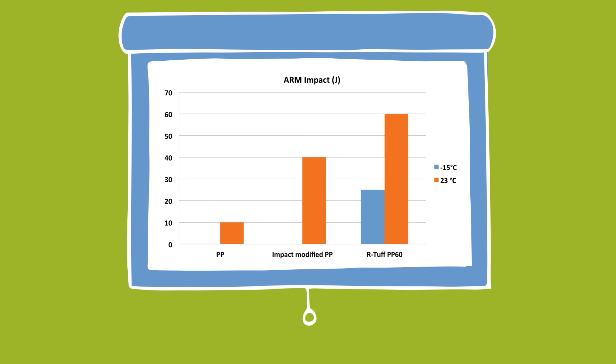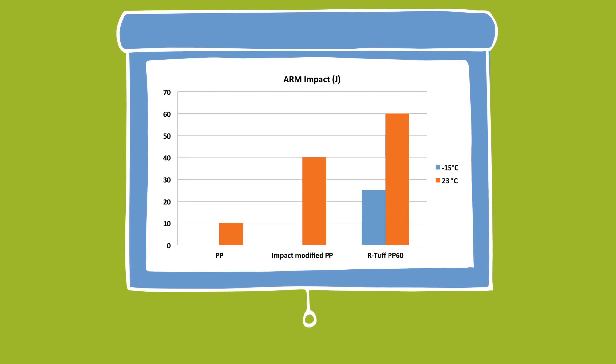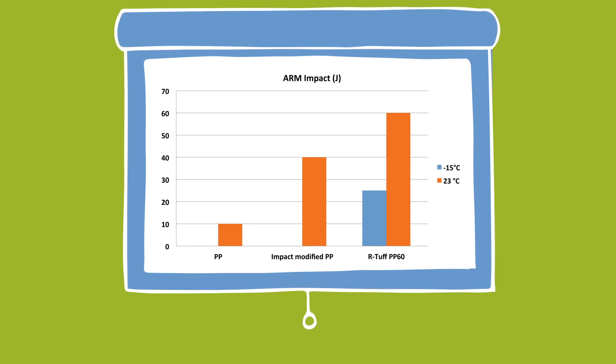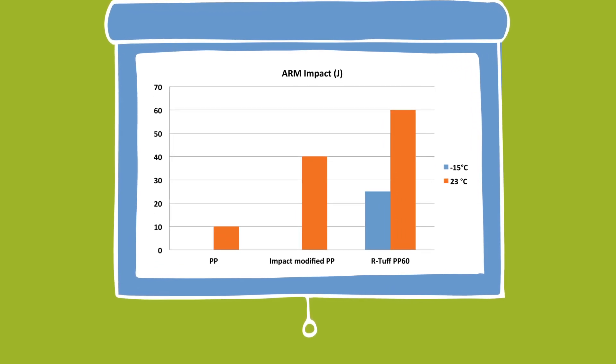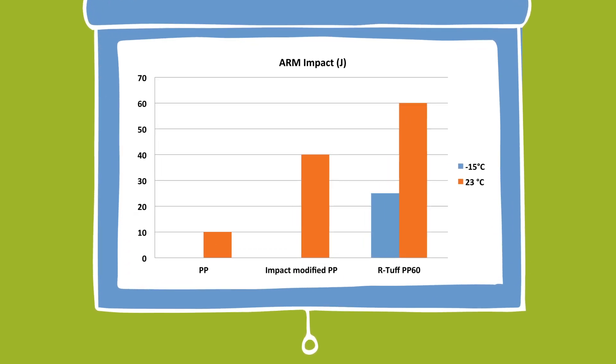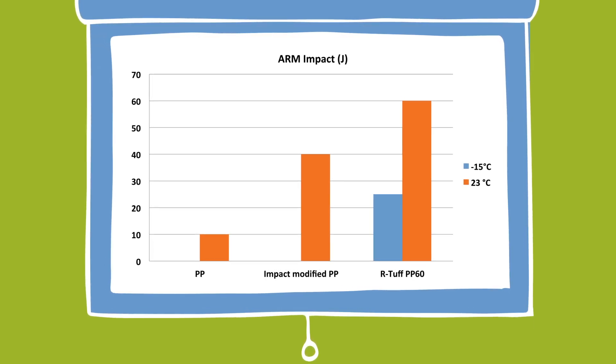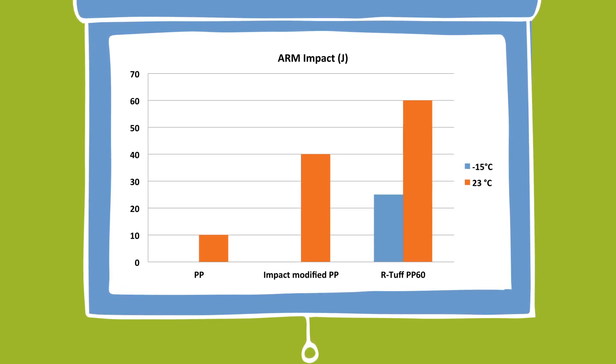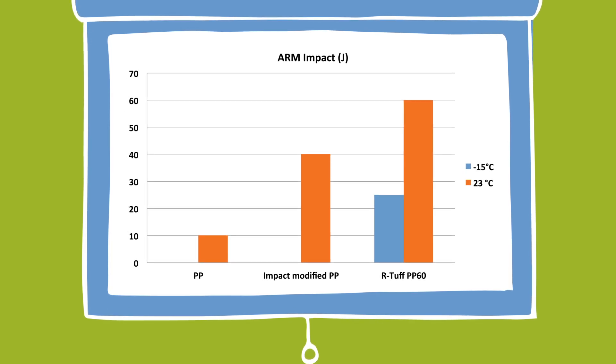The impact performance of R-Tough PP60 compared with a conventional rotational moulding polypropylene is very significant. And the material has 50% better performance than an impact modified polypropylene. What is also unusual is that the material has some impact strength at minus 15 Celsius, whereas traditionally rotomoulding polypropylene grades have been glass brittle at temperatures below freezing.